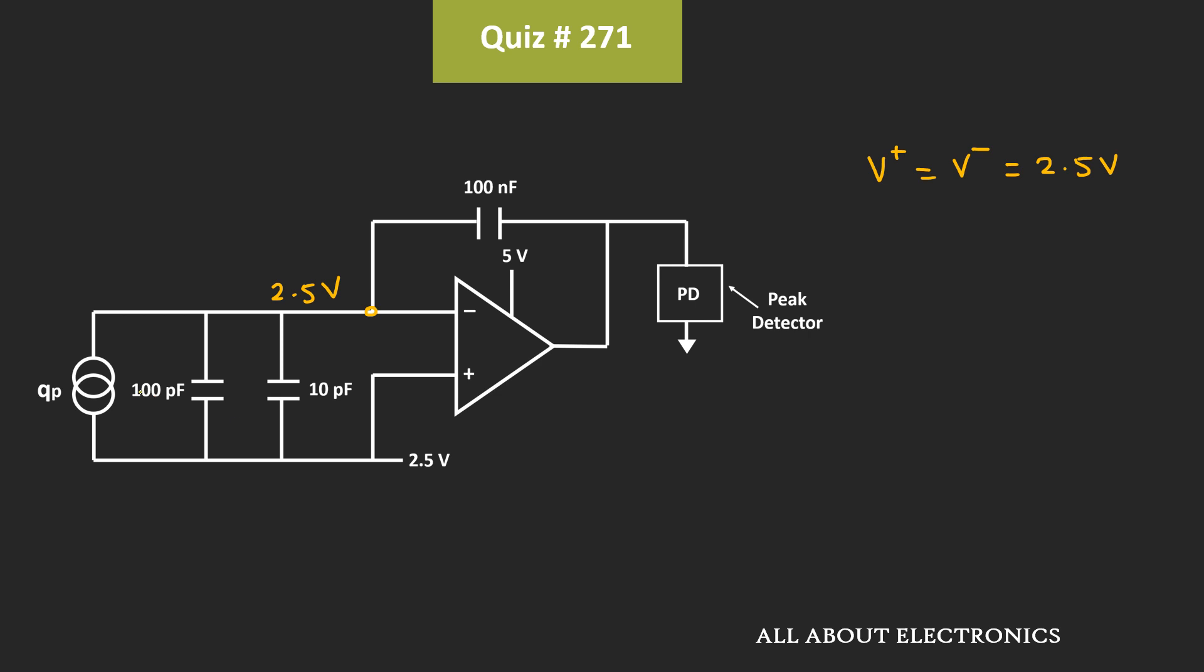As you can see, these both capacitors are connected at the same potential. And because of that, no additional charge will get stored across these capacitors. Whatever charge which is generated by this piezoelectric sensor will get stored across this 100 nF capacitor. Let's say the voltage across this capacitor is equal to Vc. As you are aware, the charge Q can be given as C times V. That means the voltage Vc can be given as this Q divided by C.